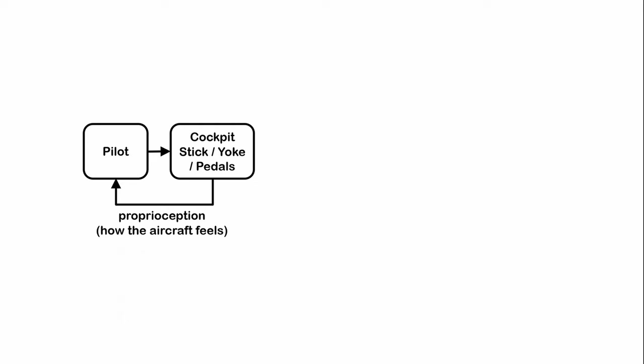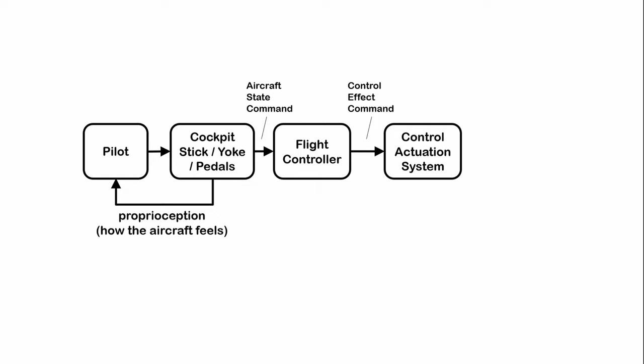The control actuation system adjusts the control surfaces according to the flight control command, thereby changing the state of the aircraft. The aircraft response is fed back through two channels. In the inner loop, a sensor, such as a gyroscope, feeds back the aircraft response data to the flight controller. This loop is known as the stability augmentation system. The outer loop is the aircraft response as perceived by the pilot. Note that the stability augmentation system will strongly play a role in the perception of the handling qualities of the aircraft.